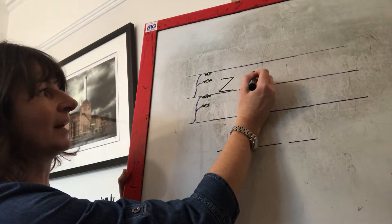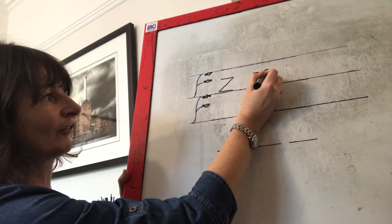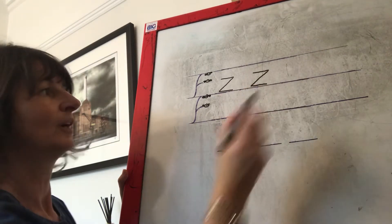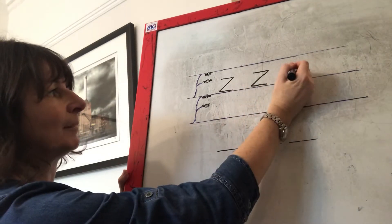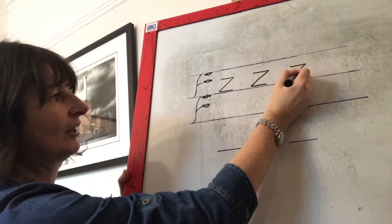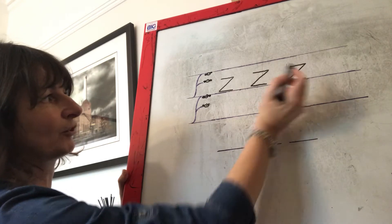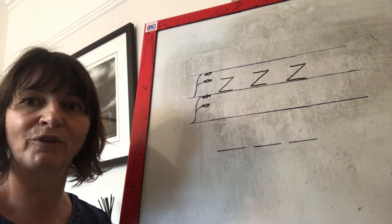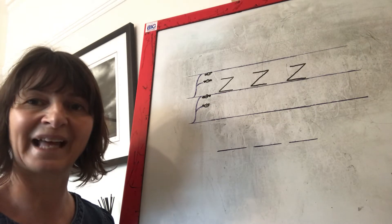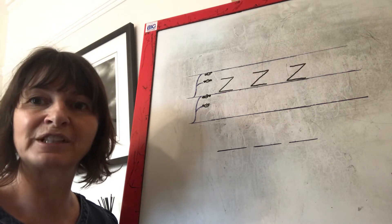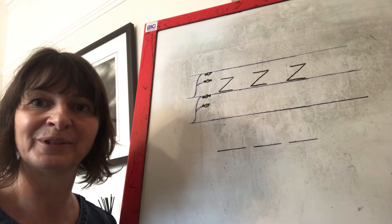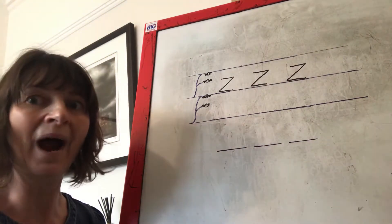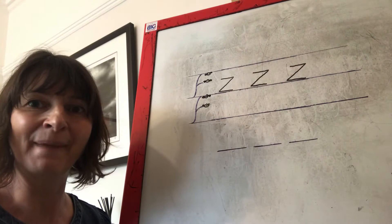We start where scared monkey is. We push across, slide down, push across. One more time: push across, slide down, push across. Can you have a go at writing three of those on your board for me? I'll let you do that now. Parents, feel free to pause the video whenever you need to. Have you done them? Wow, they look amazing. Well done.